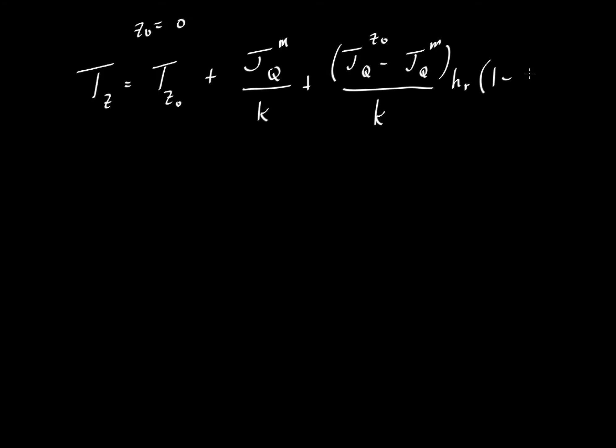So this H sub R is a distance over which the concentration of radioactive elements decays. Again, we're not talking about the radioactive decay itself, but we're talking about how quickly the concentration of radioactive elements decreases as we go from the crust to the mantle.